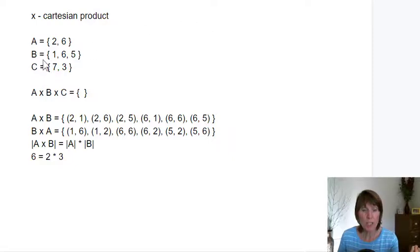Now, it is possible to do the Cartesian product of three sets. So here we have three sets, and we take the Cartesian product A times B times C. What this will produce is a set of ordered triples.